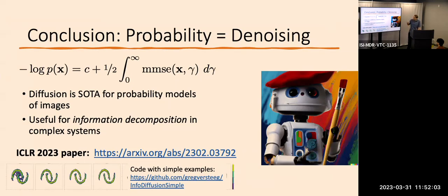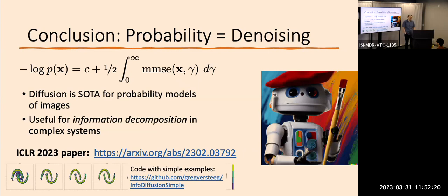The main theme I was trying to convince you of is that probability and denoising are really equivalent in some sense. Whenever I think about probability now, I'm always keeping this in the back of my mind, and I think there are a lot of ways we can exploit this relationship. I've wanted to do stuff with images and information theory for a long time, but there was never really a good enough probability model for images. Now we have these amazing probability models, and I hope some of these ideas about information decomposition can finally be useful in some of these complex systems. Thanks again — I really appreciate everybody coming.